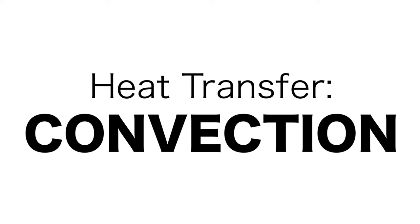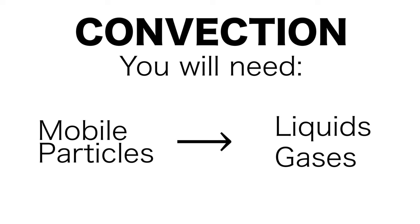To do convection you will need the following. You need some mobile particles, so this will be things like liquids and gases. If you don't have any mobile particles then you can't do convection.